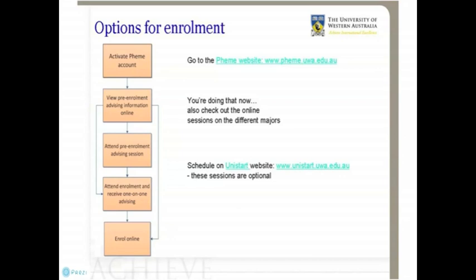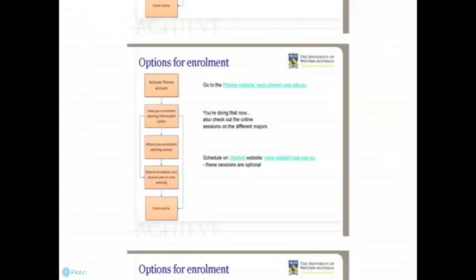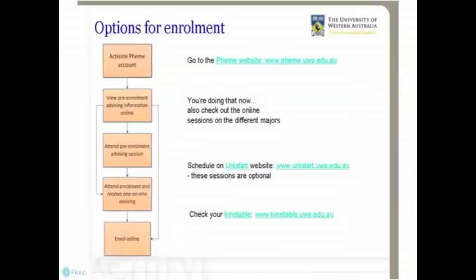And when I'm ready to enrol, what do I do then? Well, it's a good idea to check your semester one timetable. You can do this on the timetable website by putting in the units you're intending to study. If there are any clashes, it'll show up in the timetable. But what do I do if there are clashes? Well, you can change your unit enrolment to avoid clashes, but most students manage clashes by downloading their lectures from the LMS.